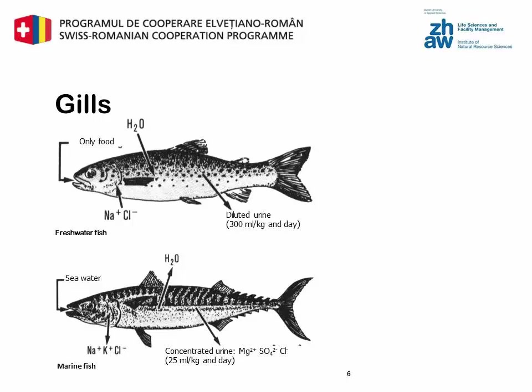To compensate for this permanent dilution of their bodily fluids, they actively transport salts into their blood and excrete diluted urine. Marine fish have a lower salt content than the surrounding seawater, meaning their bodies naturally lose water. To compensate for this, they drink seawater and actively excrete the excess salt via concentrated urine.